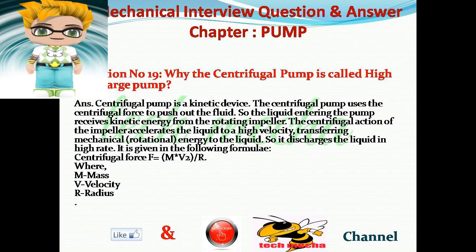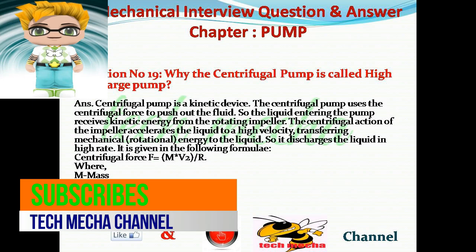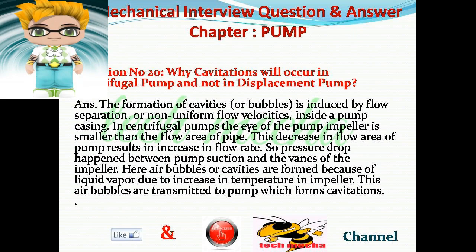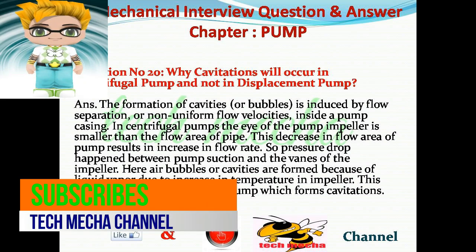Question number 19: Why is the centrifugal pump called a high discharge pump? Answer: A centrifugal pump is a kinetic device. It uses centrifugal force to push out the fluid. The liquid entering the pump receives kinetic energy from the rotating impeller, which accelerates the liquid to a high velocity, transferring mechanical rotational energy to the liquid. Question number 20: Why does cavitation occur in centrifugal pumps and not in displacement pumps? Answer: The formation of cavities or bubbles is induced by flow separation or non-uniform flow velocities inside the pump casing. In centrifugal pumps, the eye of the impeller is smaller than the flow area of the pipe, causing a pressure drop between the pump suction and the vanes of the impeller. Air bubbles or cavities form due to liquid vaporization from increased temperature in the impeller, and these are transmitted to the pump, causing cavitation.